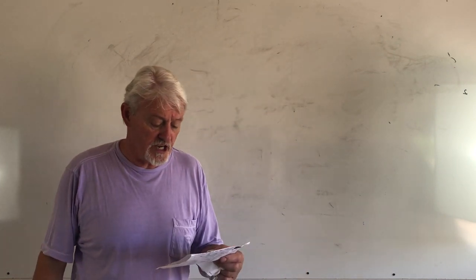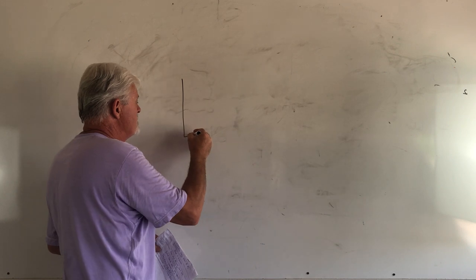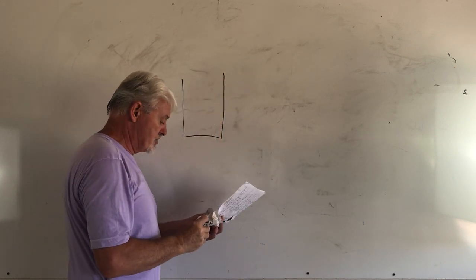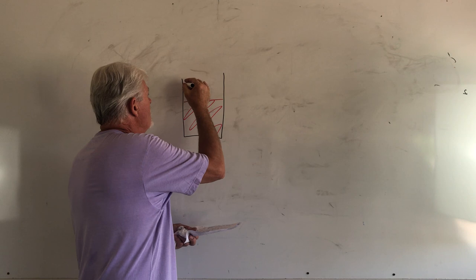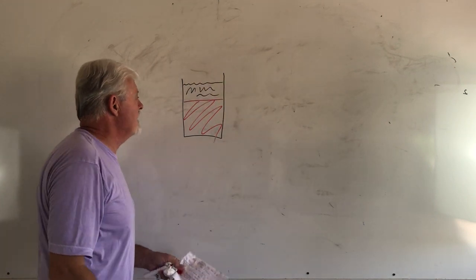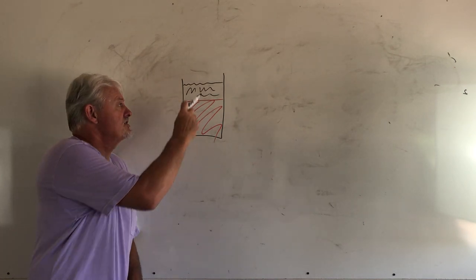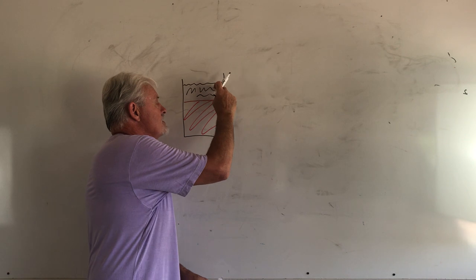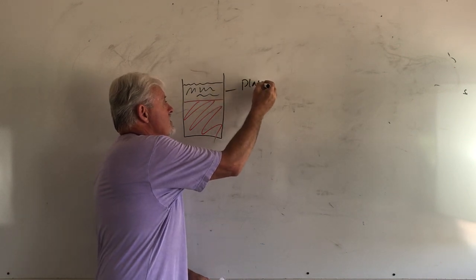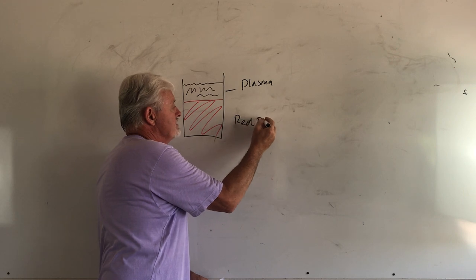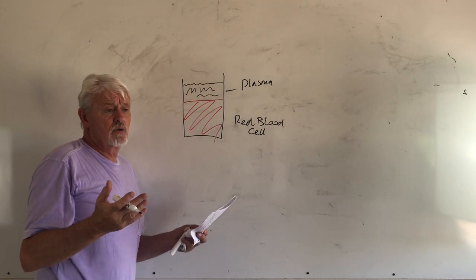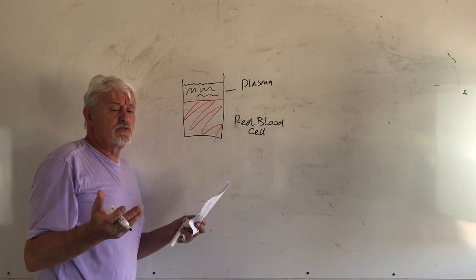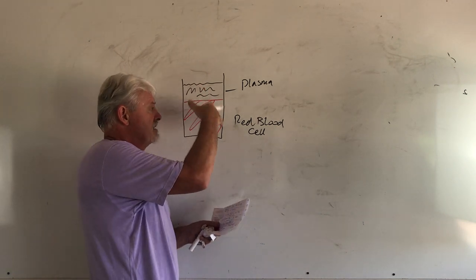I separated my blood to do a progesterone test, but I mixed it up. Can I separate it again? Yes. What we're talking about here is you collect blood and put it into a container. What you're trying to do is separate the red blood cells from the plasma. If you let that blood sit for long enough, it will separate out all by itself. This is the part we want to use for the test. Whether it be a relaxin pregnancy test or a progesterone test, we're using the plasma. We don't want the red blood cells. So what happens is this can get stirred up and mucked up again. Just let it sit again and it'll all separate out. There's nothing magic going on here.